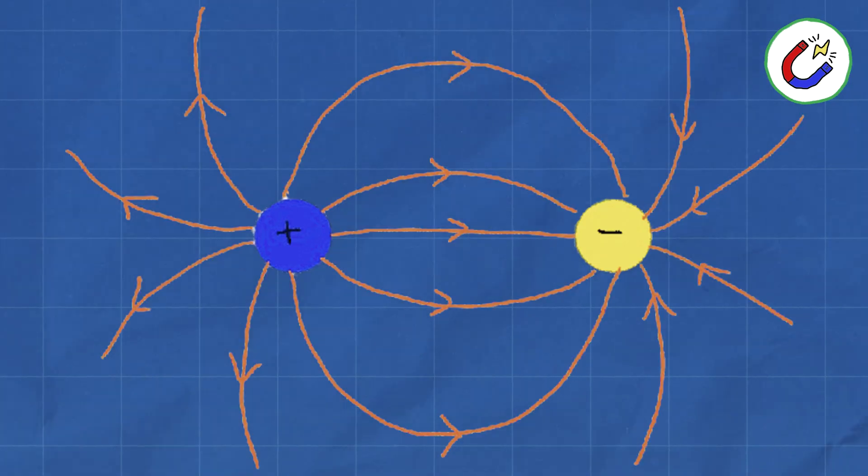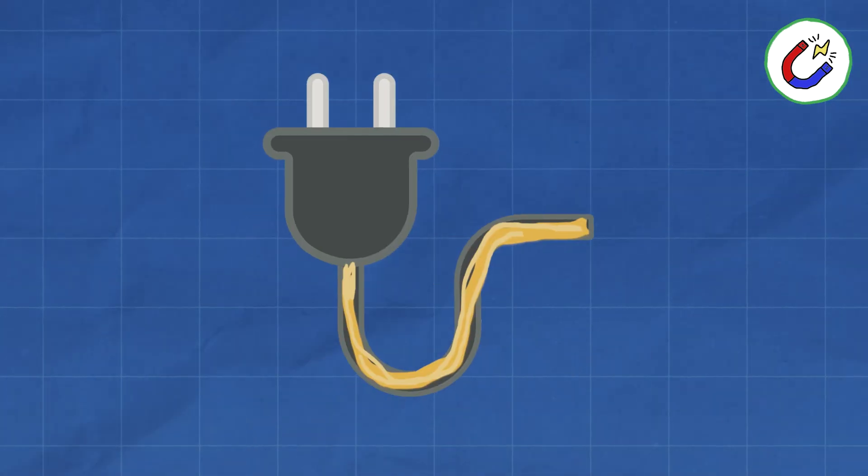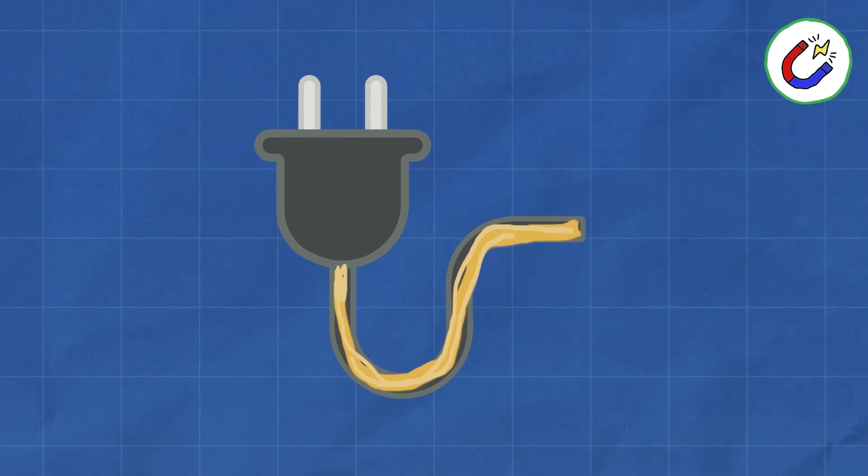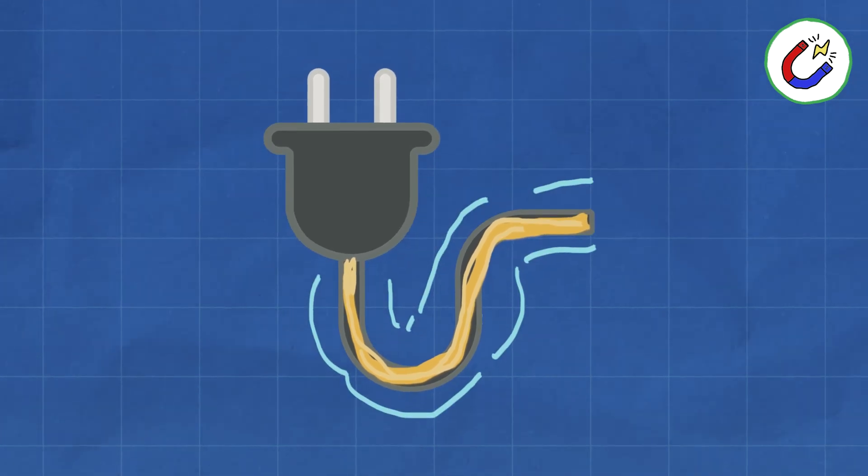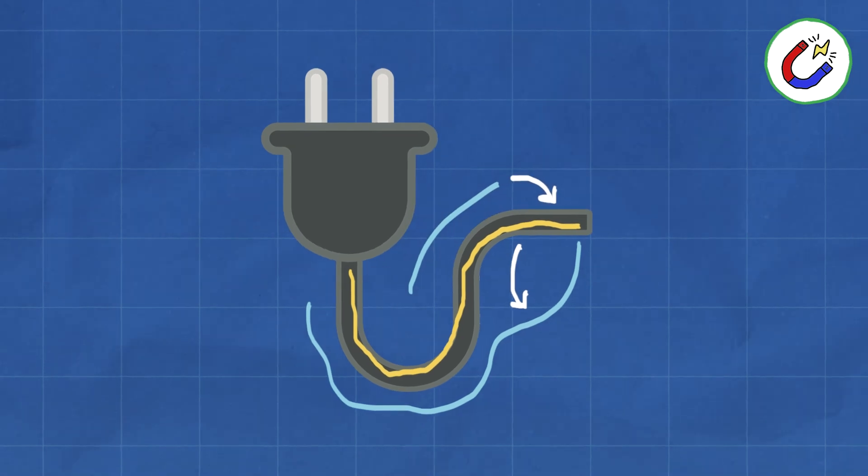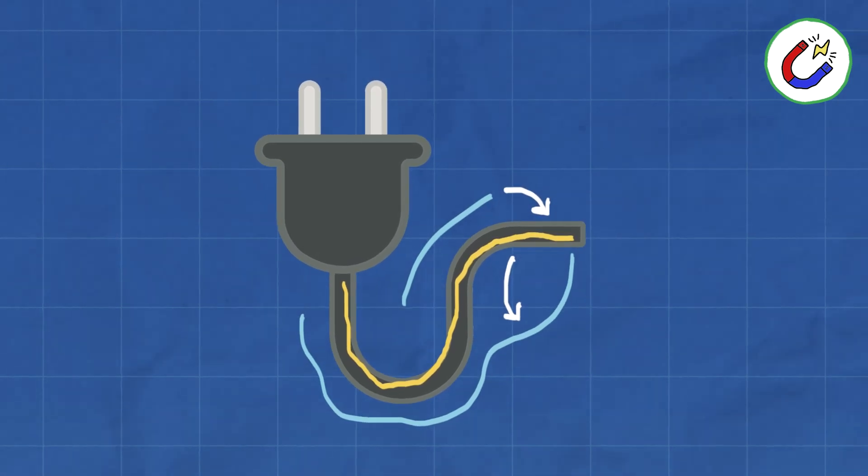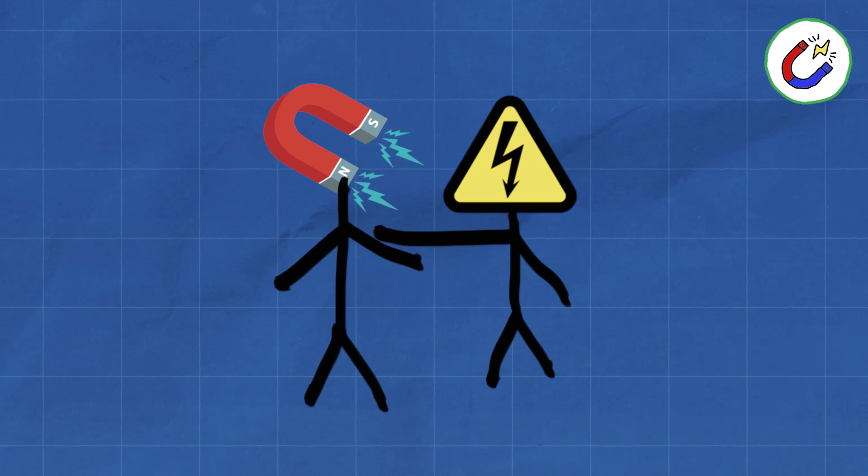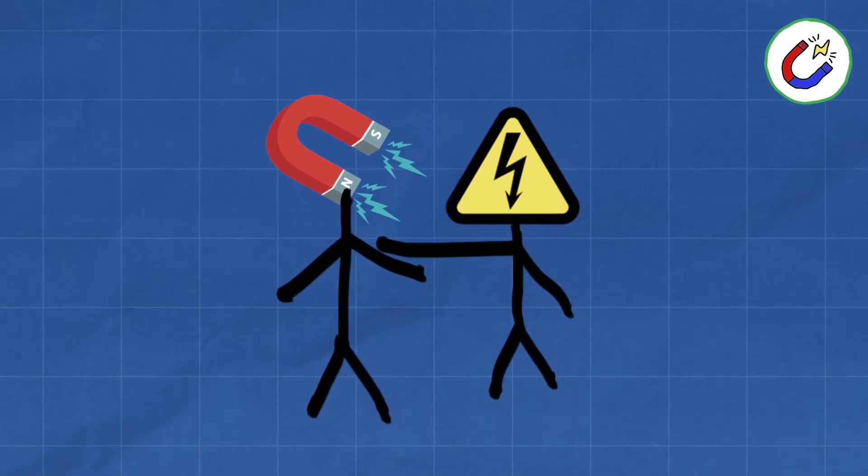Moving electric charges create magnetic fields. Think of a current flowing through a wire. It generates a magnetic field around it, and the plot thickens. Changing magnetic fields can induce an electric current, and vice versa. It's a cosmic feedback loop of electric and magnetic forces playing tag.